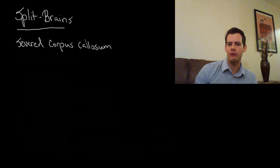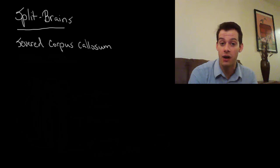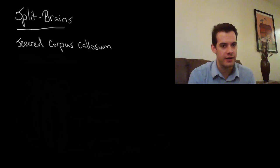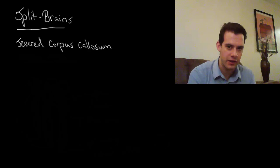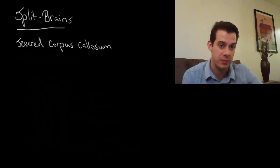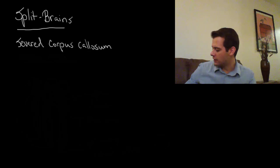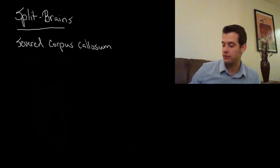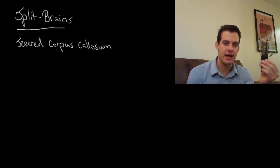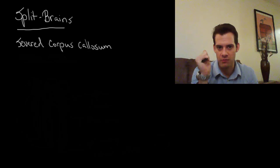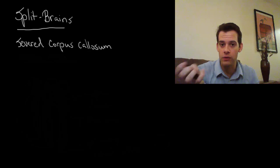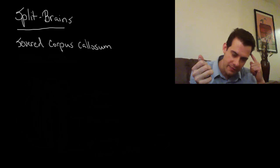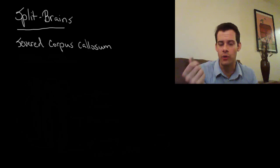So what this means is that if we send information to the left hemisphere we can talk about it. But if we send it to the right hemisphere and we can't get it over to the left hemisphere via the corpus callosum then we can't talk about it. So how can we demonstrate this with a split brain patient? Well, let's say we gave them an object to hold. So if I were to place this object in their right hand, remember the idea of contralateral control. This is going to get sent from the right hand to the left hemisphere.